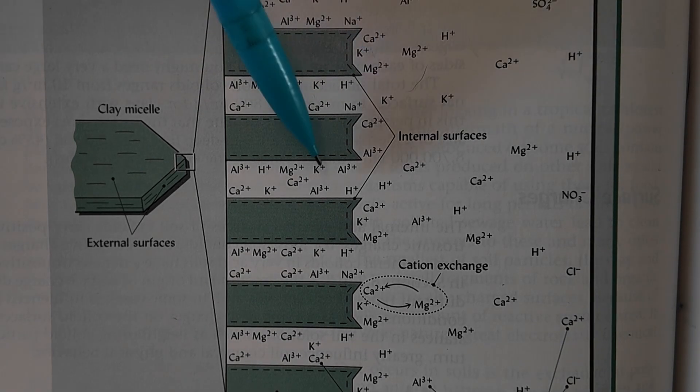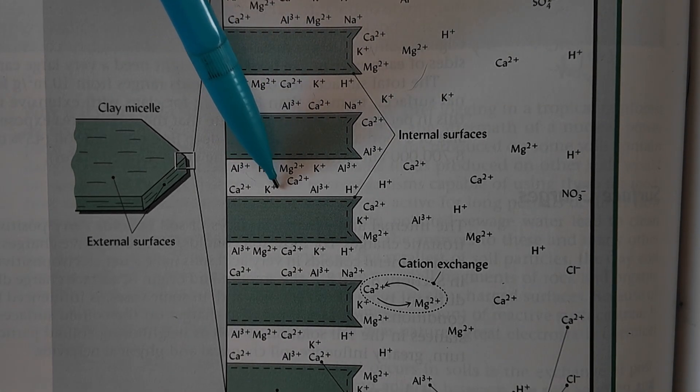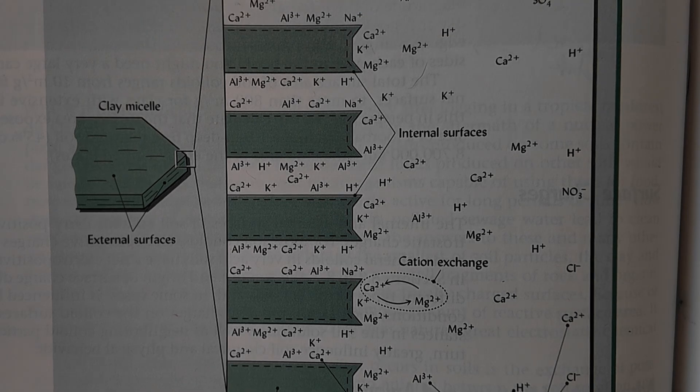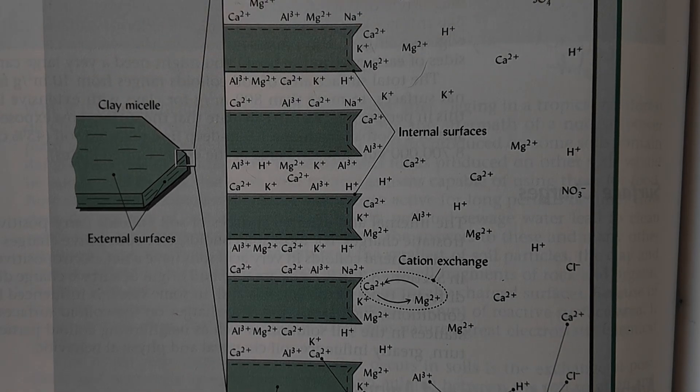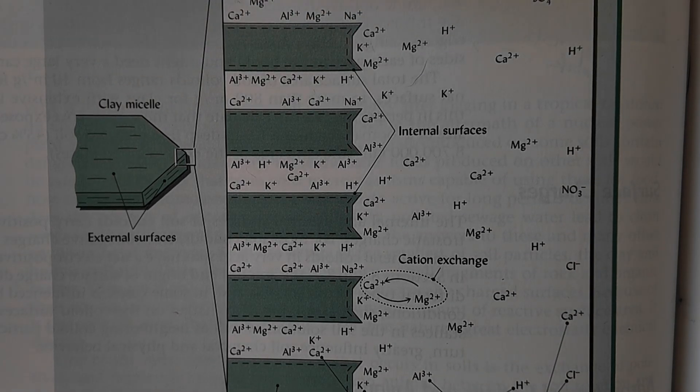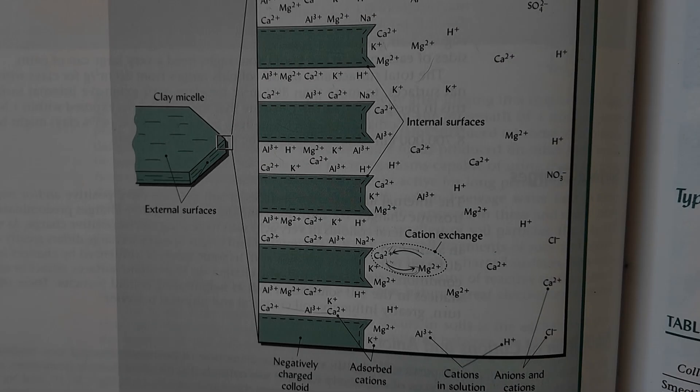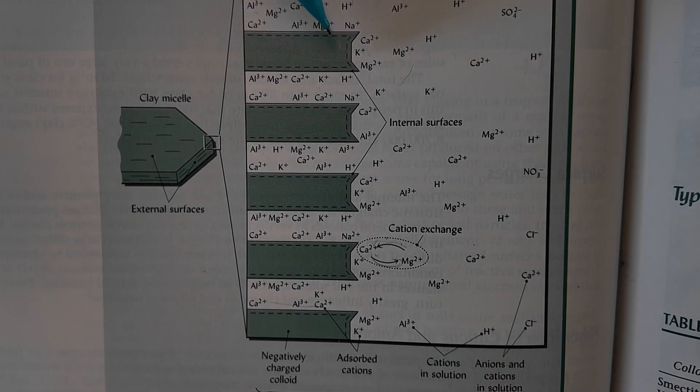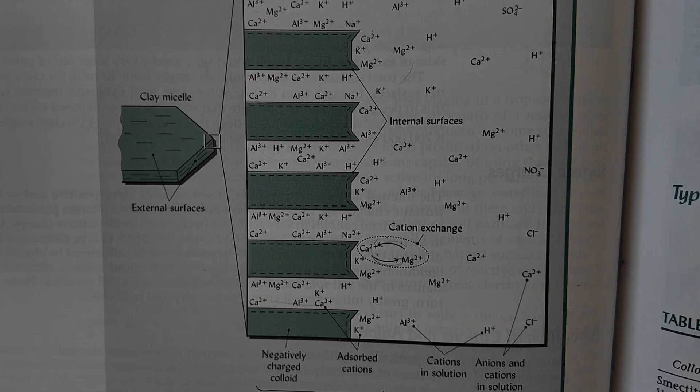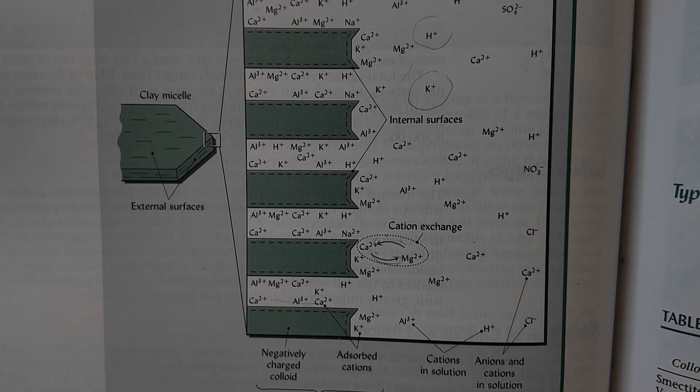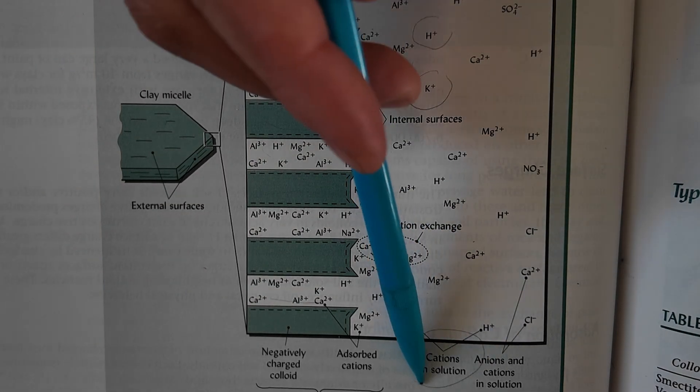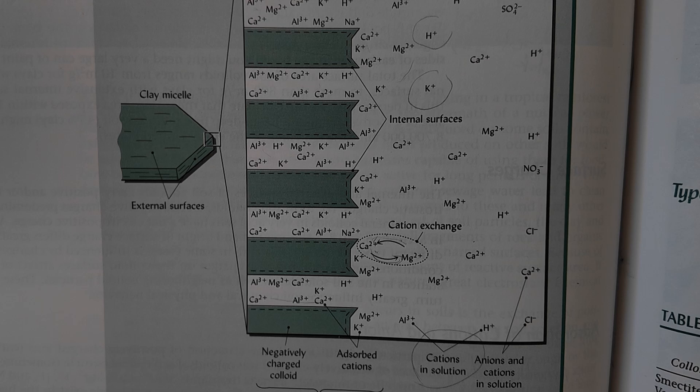This diagram is an example of that. This specifically is showing a type of clay that has a very flaky layered arrangement. That's why you have multiple surfaces here. But you can see that there's some positively charged ions already attached to that surface. And just beyond that, you have other positively charged ions, cations, that are in the soil solution.